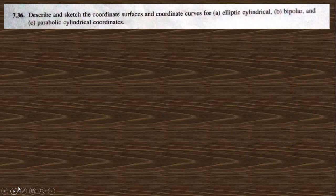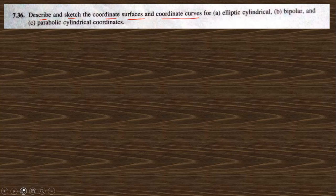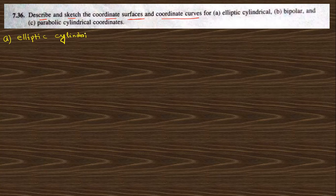This question says: describe and sketch the coordinate surfaces and coordinate curves of the elliptic cylindrical, bipolar, and parabolic cylindrical coordinate systems. First, we want to discuss part A, which is about the elliptic cylindrical coordinate system.